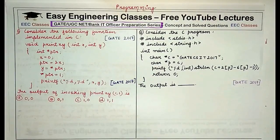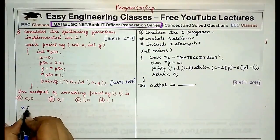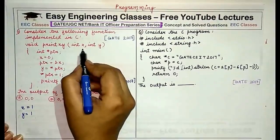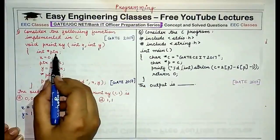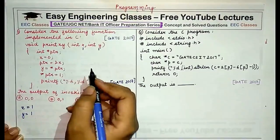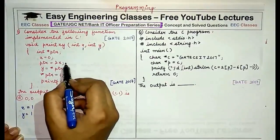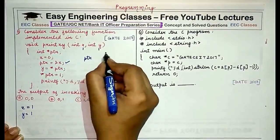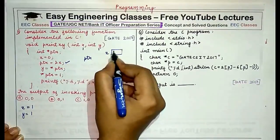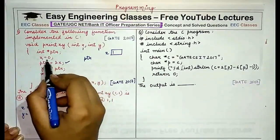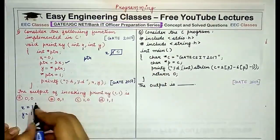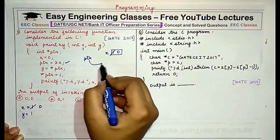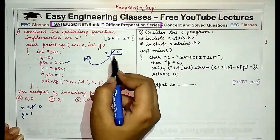Initially when the function is invoked with x and y equal to 1 each, x is 1 and y is 1. Inside the function we declare a pointer ptr. x is then changed to value 0. Then the pointer is assigned the address of x, so ptr is now referencing x.